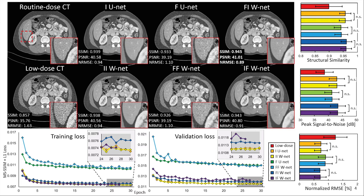The bar plots on the right show there were no significant quantitative differences within the same domain configuration — for example, the I-Unet versus the II-Wnet — and the order did not matter in the dual-domain W-nets. The dual-domain approaches had the best quantitative metrics by a small margin over the image-domain-only metrics.